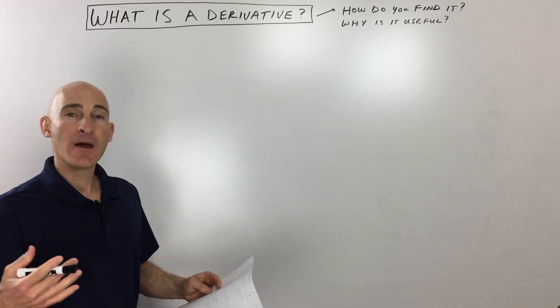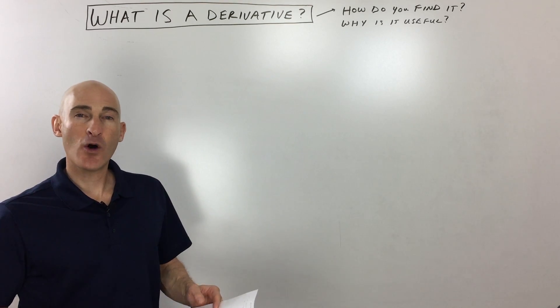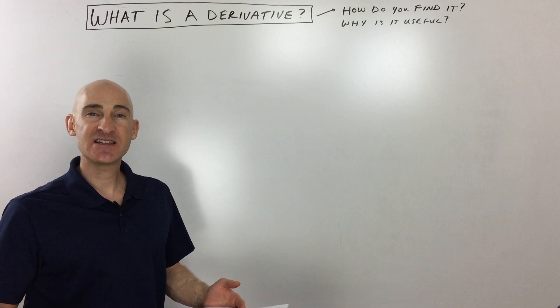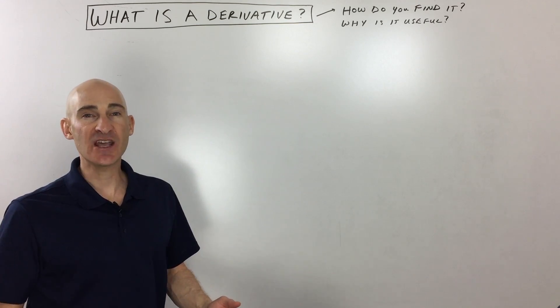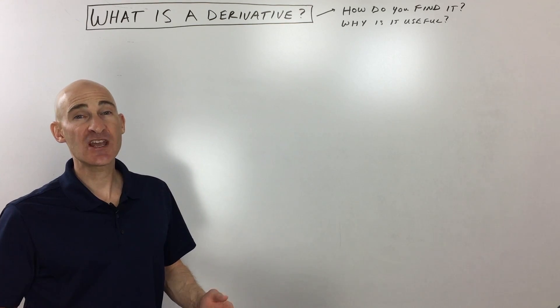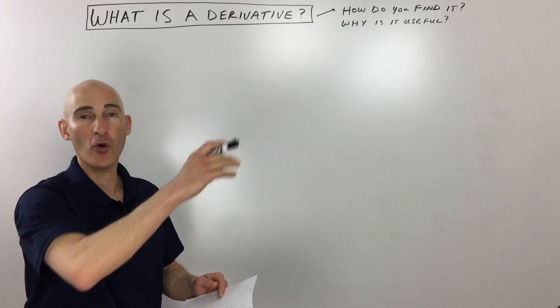What is a derivative? Basically, a derivative is a way of finding the instantaneous rate of change. And when you hear the words 'rate of change,' that means it's referring to the slope.